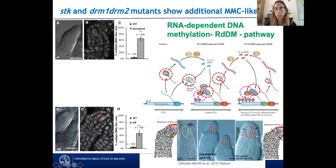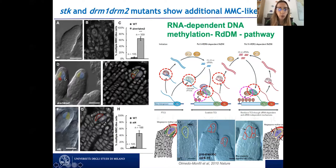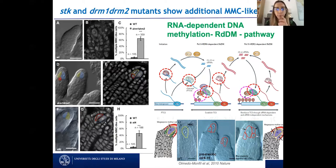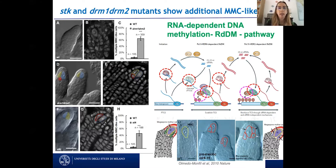We also wanted to see whether DRM mutants have a phenotype in the nucellus. Indeed, in optical and confocal pictures, we can see more than one cell enlarging in the nucellus of the DRM1 DRM2 double methyltransferase mutant — observed in 65% of ovules analyzed, compared to approximately 6% in wild type. This was very important because abolishing methylation in the RdDM pathway produces exactly the same phenotype described for ARGONAUTE9, RDR6, and Seedstick — extra MMC-like cells in the nucellus.